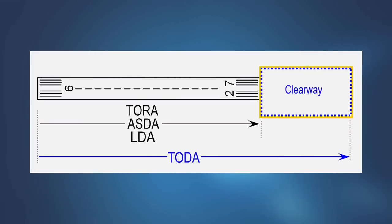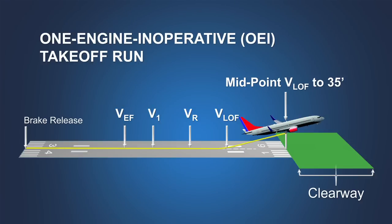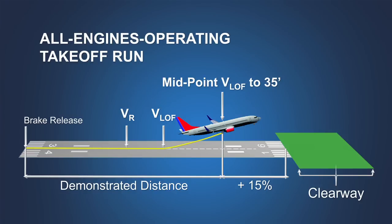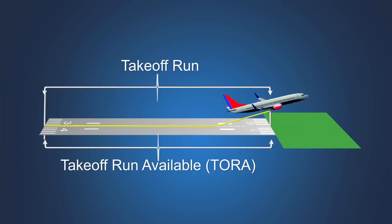The takeoff run distance is a consideration when the takeoff run available is less than the takeoff distance available. For example, when the runway has a designated clearway usable for takeoff planning, the takeoff distance available will be longer than the takeoff run available. The takeoff run is the longer of the distance required from the start of the takeoff to the midpoint between liftoff and the point at which the airplane attains a height of 35 feet above the takeoff surface with one engine inoperative, or 115% of that distance with all engines operating, whichever is longer. The takeoff run applies only on a dry runway. The calculated takeoff run cannot be longer than the takeoff run available.